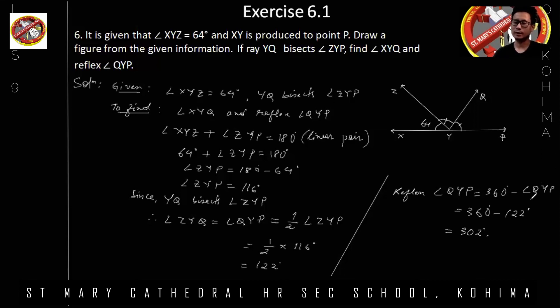So here we took 360 degrees minus angle QYP. Take Y as a point, so the complete angle is 360 degrees. So from the complete angle, if we subtract angle QYP, then we will get reflex angle QYP. So we got reflex angle QYP is 302, which lies between 180 and 360. So reflex angle is an angle which is more than 180 but less than 360.